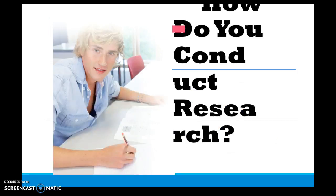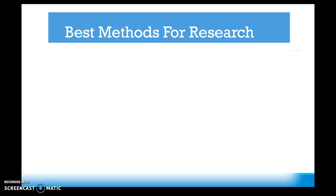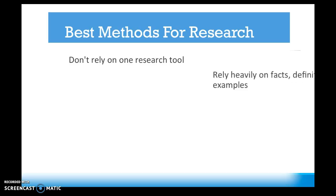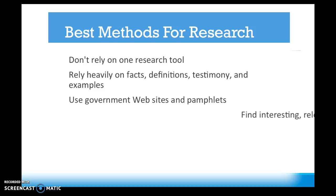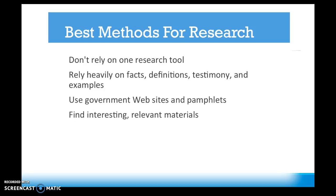How do you conduct the research for your informative speech? The best methods of research: first, don't rely on one research tool — i.e., the internet. There are a lot of other tools out there. Rely heavily on facts, definitions, testimonies, and examples — you want a good mixture of supporting materials. Use government websites and pamphlets; they are very credible. Find materials that will interest your audience because they are relevant, unique, current, and easy to understand.